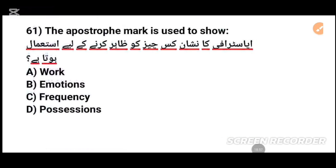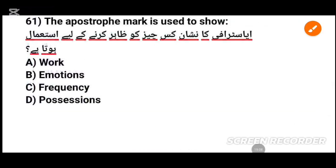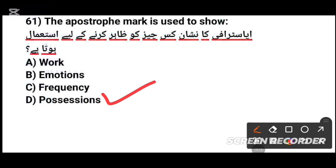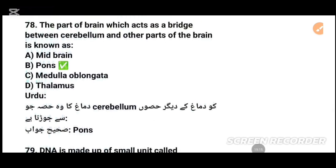MCQs number 61: The apostrophe mark is used to show dash. apostrophe کا نشان کس چیز کو ظاہر کرنے کے لیے استعمال ہوتا ہے؟ The answer: to show possession — D number option, tick that.